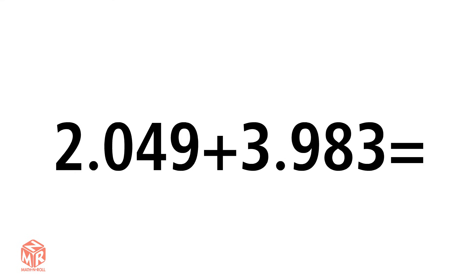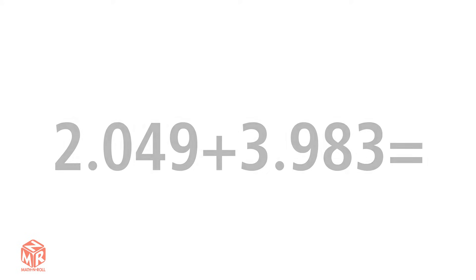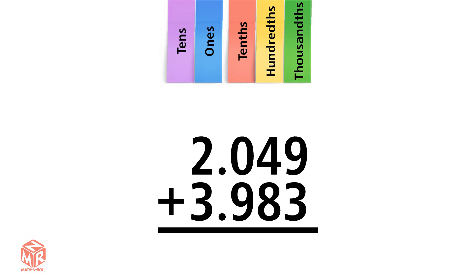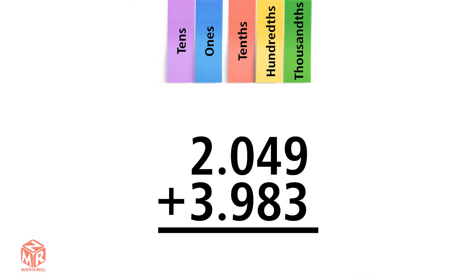Let's try another example: 2 and 49 thousandths plus 3 and 983 thousandths. We start by lining up the decimal point. This time we're not going to draw. We start adding from right to left, so we start with the thousandths. 9 plus 3 equals 12. 12 is greater than 9, so we have to regroup. We're left with two thousandths and we write that in the thousandths column.